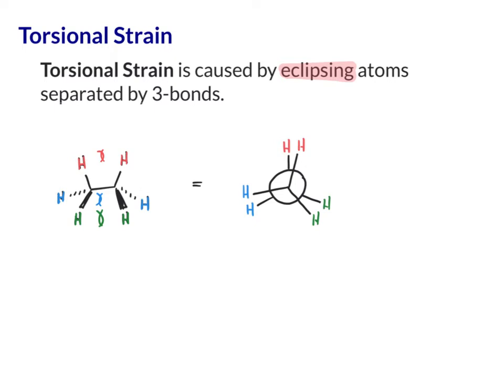To clarify this three-bond separation, look at the two hydrogens in red — they're separated by one, two, three bonds. This doesn't have to be eclipsing hydrogens; it can be any eclipsing atoms. In this particular conformation of butane, there's torsional strain between the two carbons of the methyl groups because they're eclipsed and separated by one, two, three bonds. You also still have torsional strain between the hydrogens on each side.